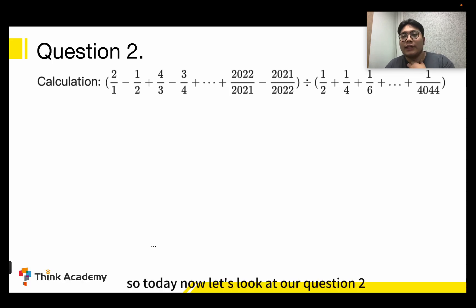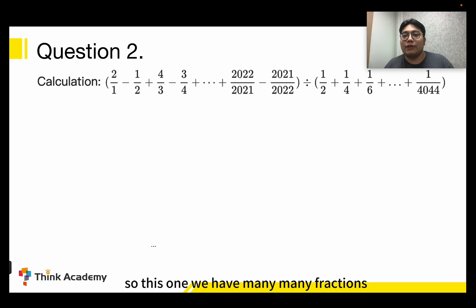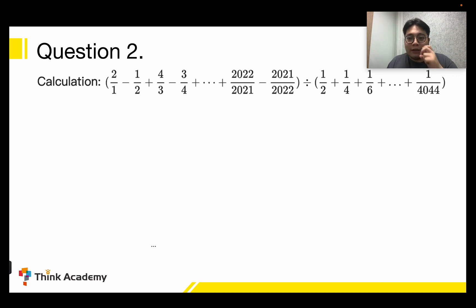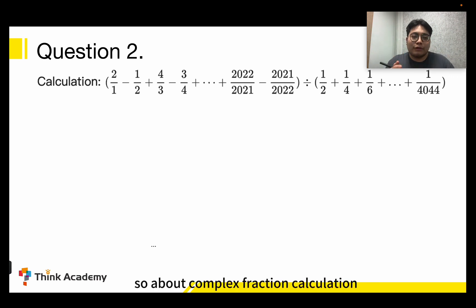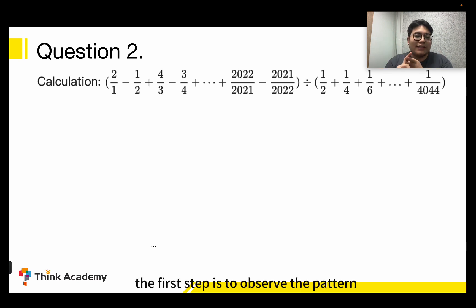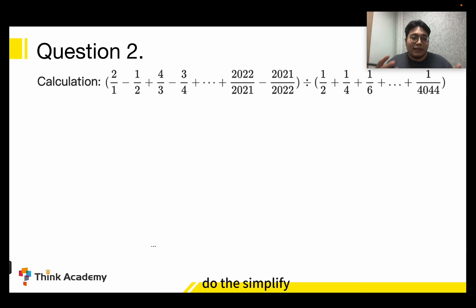Hello everyone, today let's look at question 2, which is also about calculation. We have many fractions, so we can call it a complex fraction calculation. For complex fraction calculations, we should always use this method: the first step is to observe the pattern, and the second step is to find the pattern and then simplify.